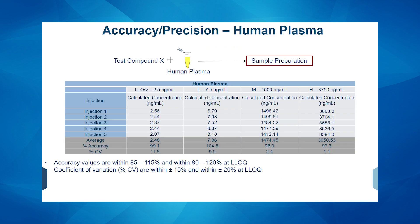To determine accuracy and precision of this method, we created quality control samples at four different concentration levels at five replicates each. We looked at the accuracy coming out of each of these levels and also calculated percent CV to determine precision. Our accuracy values fell within 85 to 115 percent, and 80 to 120 percent at LLOQ. The coefficient of variation was within ±15 percent and within ±20 percent at LLOQ, all within the validation guidelines.